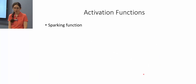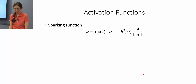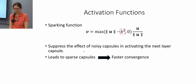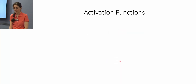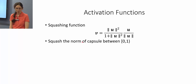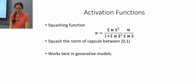In subspace capsule network, we use two different activation functions. The first is a sparking function, which suppresses the effect of noisy capsules: if the norm of the capsule is smaller than a v-squared threshold, that capsule is shut down. This leads to sparse capsules, causing faster convergence specifically in discriminative models. The second activation function is a squashing function, borrowed from the original capsule network, which squashes the norm between 0 and 1 to indicate the probability of presence of an entity — working best in generative models.